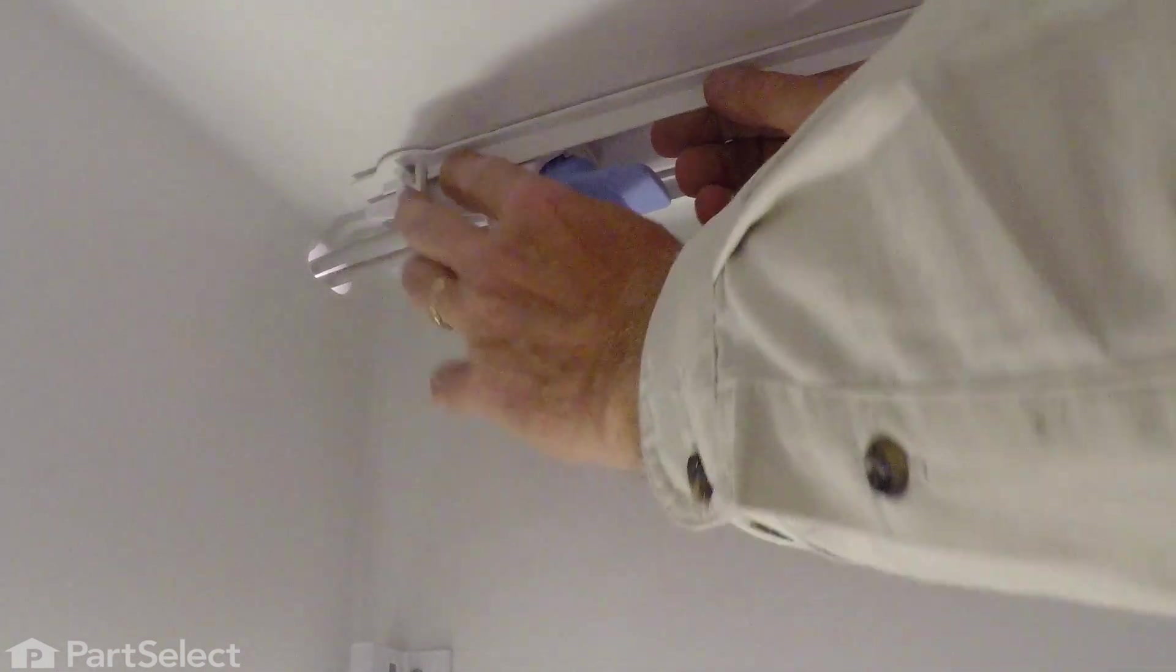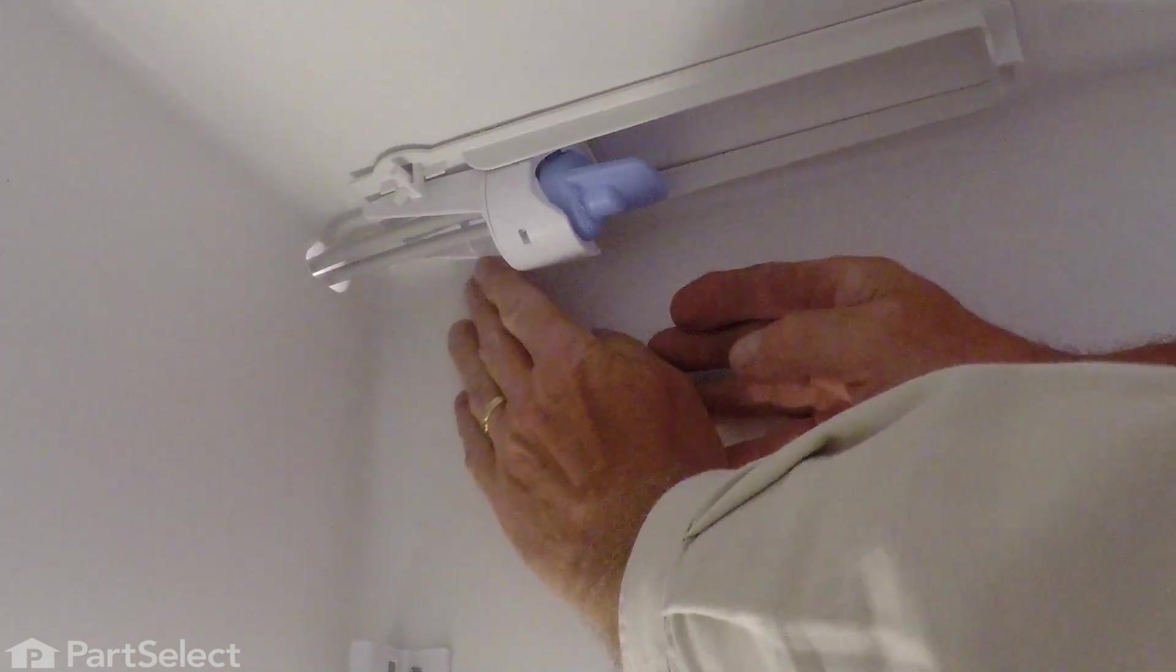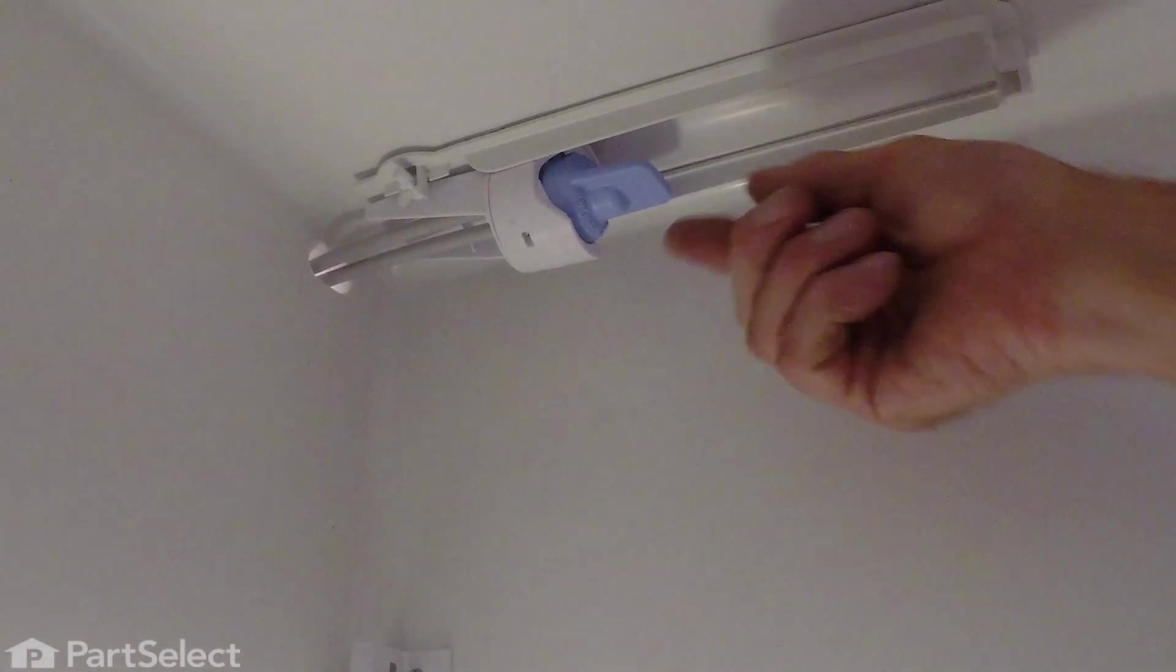Then reach in and snap the opposite side in so that it pivots freely. If we dislodge this housing in the ceiling, make sure that we snap that back into place.